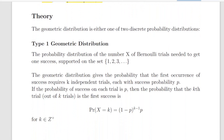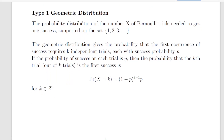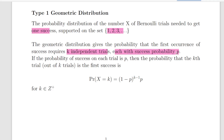What is the difference between the Type 1 and Type 2 distribution? The geometric distribution is either one of two discrete distributions. The Type 1 geometric distribution is the probability distribution of the number x of Bernoulli trials needed to get one success, supported on the set {1, 2, 3, ...}. It gives the probability that the first occurrence of success requires k independent trials, each with success probability p, and we're interested in how long it takes to get the first success.